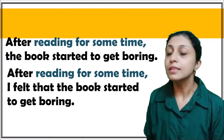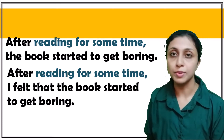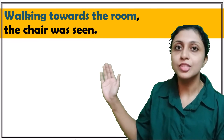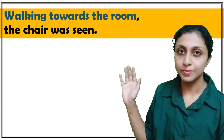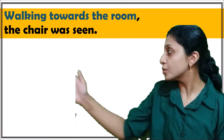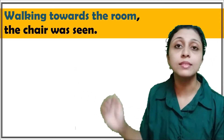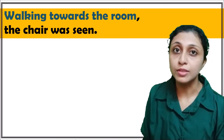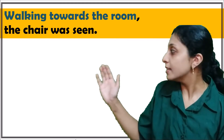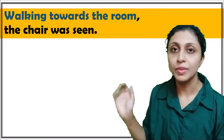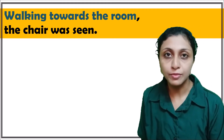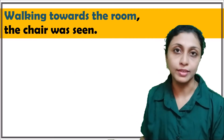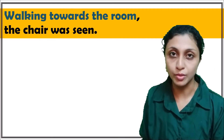Here is another example: 'Walking towards the room, the chair was seen.' Here, 'walking towards the room' is the participle phrase, and the second part says 'the chair was seen.' This can cause confusion — it may seem as though the chair was walking towards the room.